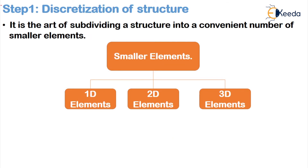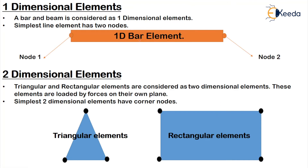Discretization is the art of subdividing the structure into a convenient number of smaller elements. The smaller elements can be of three types: 1D element, 2D element, and 3D element. If it is a 1D element, it is nothing but a bar element — the simplest form is a line element with two nodes. The beam and bar are considered to be your 1D elements.